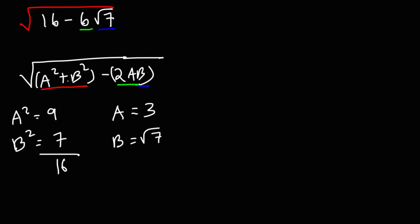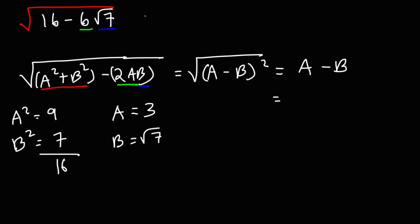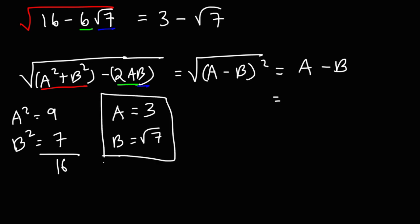So that tells us we can use this formula. We have it in the form a squared plus b squared minus 2ab. So this is going to be the square root of (a - b) squared, which simplifies to a minus b. Our final answer is a minus b: a is equal to 3, b is equal to the square root of 7. So let's check this answer.